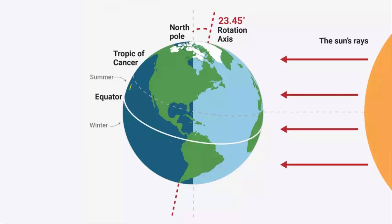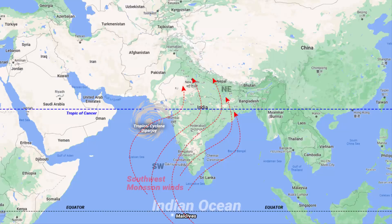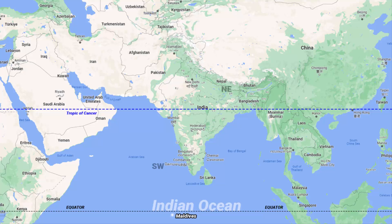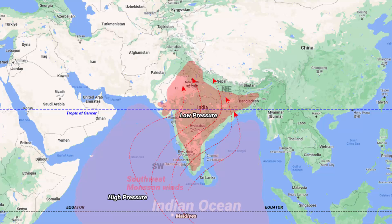During summer, the sun's rays are more direct over the Tropic of Cancer, which is located north of the Indian subcontinent. This causes the land to heat up more than the ocean, creating a low-pressure area over the land and a high-pressure zone over ocean waters. This pressure gradient between the two regions generates winds that blow from the ocean towards the land. This is the basic mechanism of the southwest monsoon — it is caused by the difference in temperature between the land and the ocean.